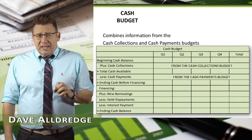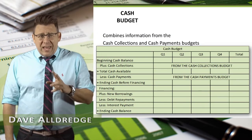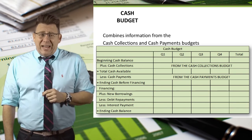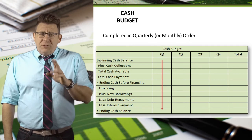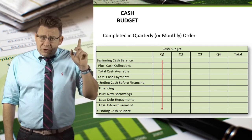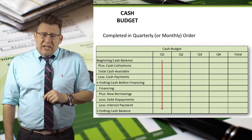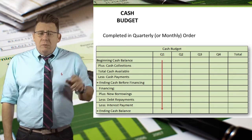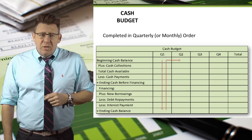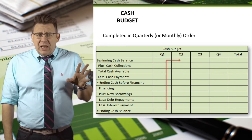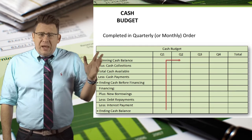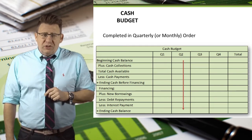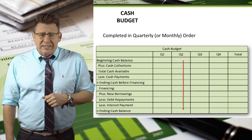The cash budget combines data from the cash collections budget and the cash payments budget, which is why it is sometimes called the combined cash budget. This is one of the few budgets we complete vertically rather than horizontally, meaning we complete one month or quarter fully before moving to the next, because the ending balance for one quarter becomes the beginning balance in the next.